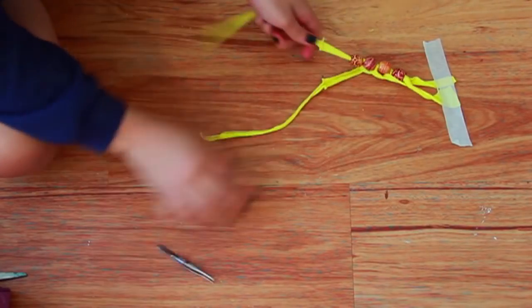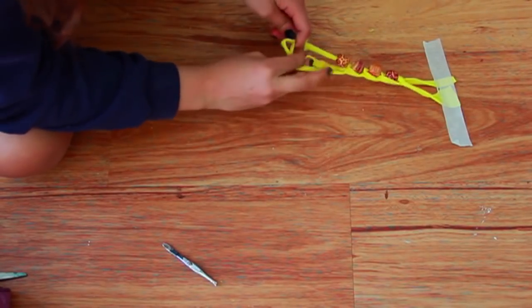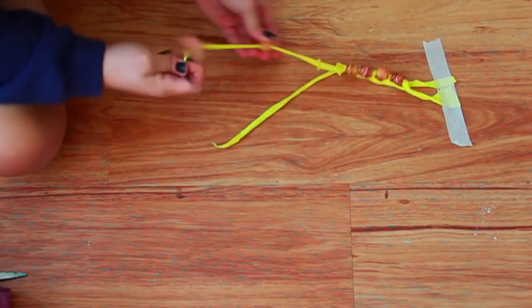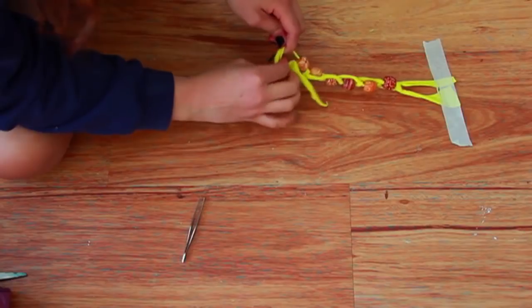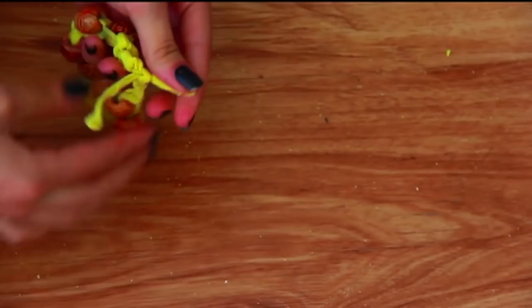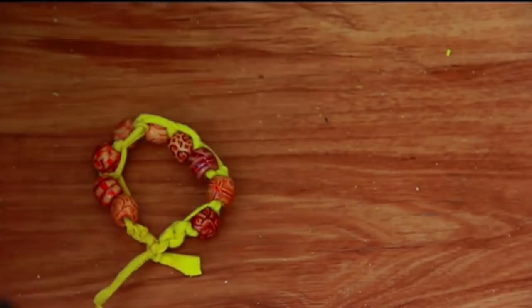Then tie another knot and add a bead, tie another knot, add a bead, tie another knot, add a bead, until you are completely finished. This is what it looks like once you're finished.